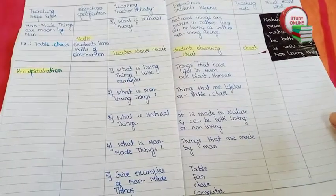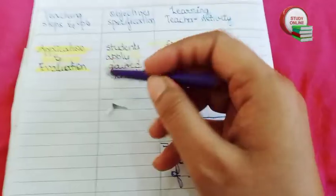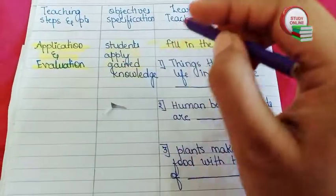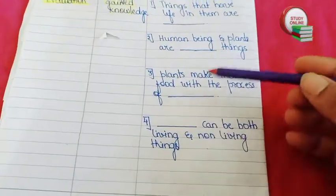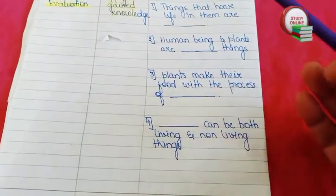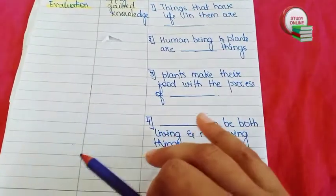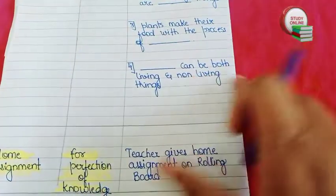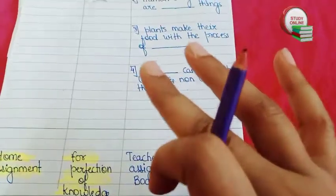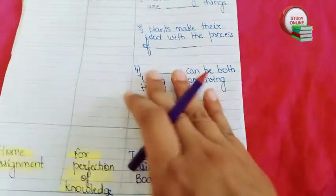This is the overall look of our lesson plan. The last part is application and evaluation — fill in the blanks. You can see four questions; five questions is enough, do not add more than that. For home assignment, we give students an assignment for perfection of their knowledge. If you need the PDF, just check the description box below.